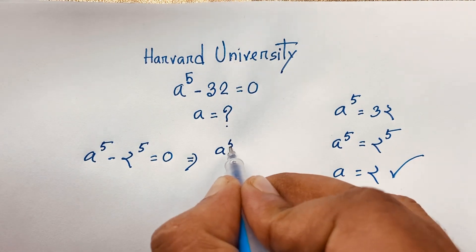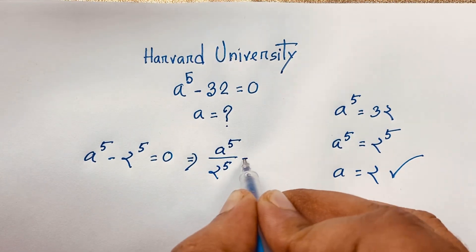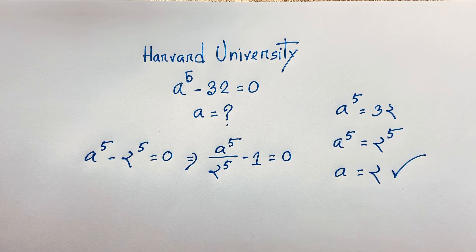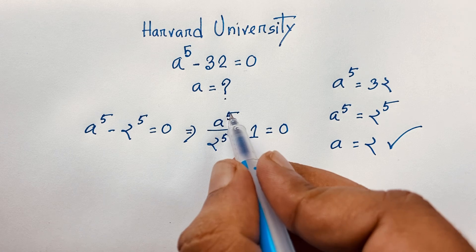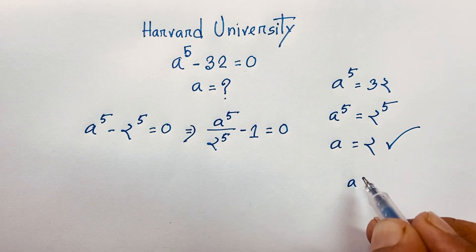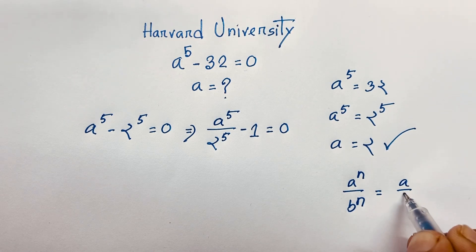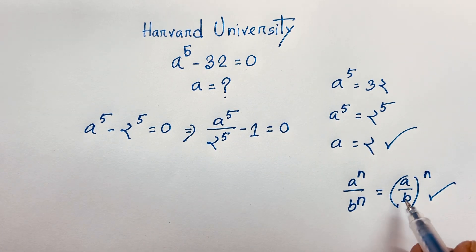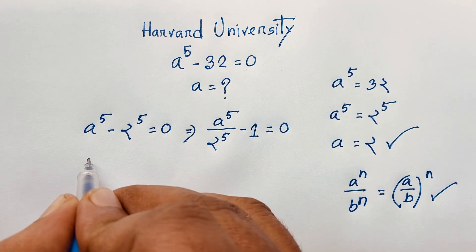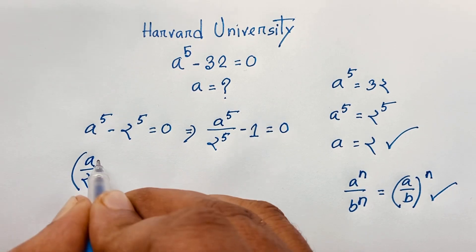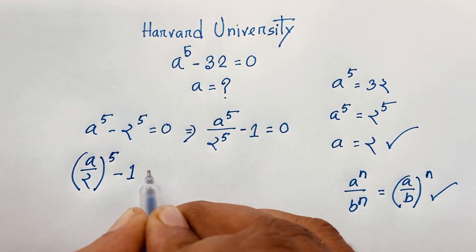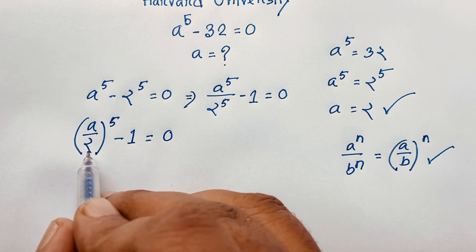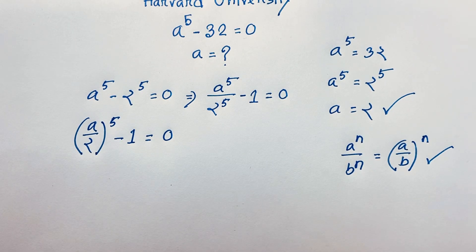After dividing both sides by 2 to the power 5, we get a to the power 5 over 2 to the power 5 minus 1 equals 0. We know that a to the power n over b to the power n equals (a over b) to the power n. Applying this rule, we get (a over 2) to the power 5 minus 1 equals 0.